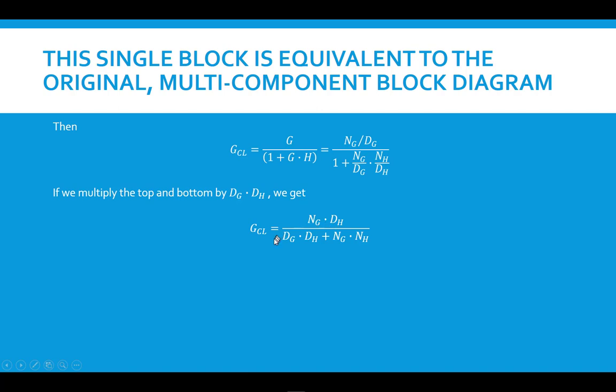So this is a very useful form of the closed-loop transfer function that we'll use over and over again: NG times DH over DG DH plus NG NH. I've already stated this, so I'll continue.